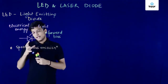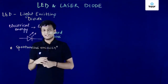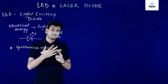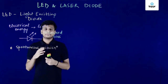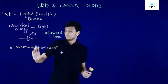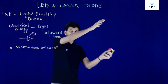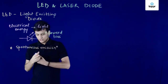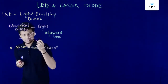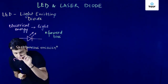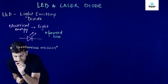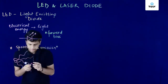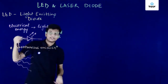Talking about the light that an LED produces: firstly, it is divergent light, and secondly, it is incoherent light. Divergent light means that the rays of light spread outward — one ray goes this way, another goes that way, and so on. You can see that the light is diverging, and that is the case with an LED.